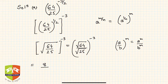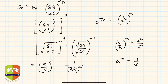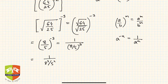Root of 64 is 8 and square root of 25 is 5, so now it is (8/5) to the power minus 3. This is equal to 1 upon (8/5) to the power 3, by the rule a to the power minus n equals 1 by a to the power n.